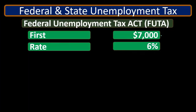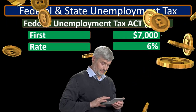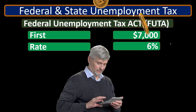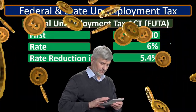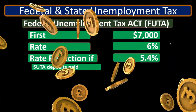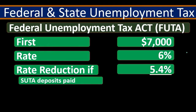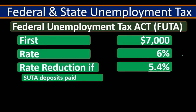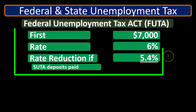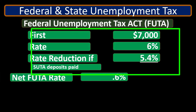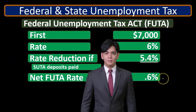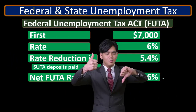The law sets the rate at six percent, but to incentivize states to implement their own unemployment tax systems, the federal government offers a 5.4% rate reduction if the state complies with FUTA requirements. This means the net effective FUTA tax rate is 0.6 percent for all practical purposes.